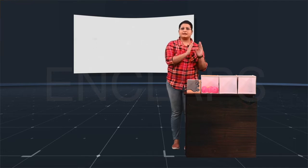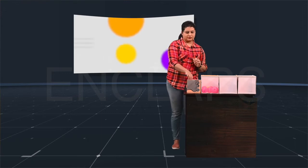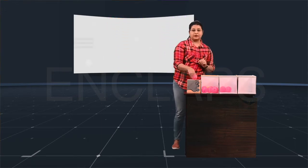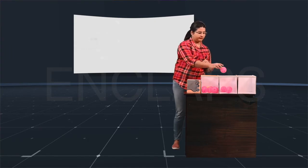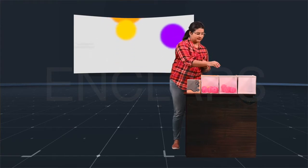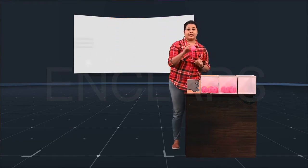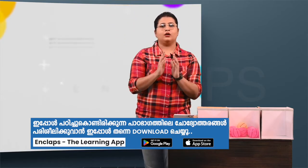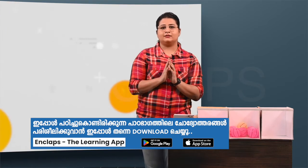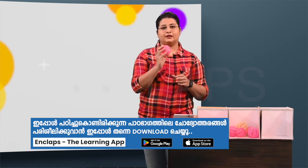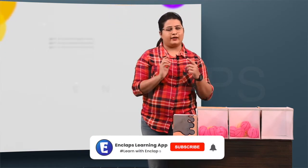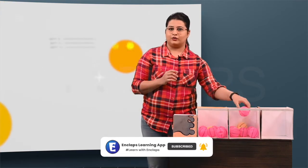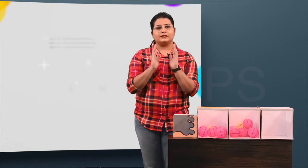Now let's put some balls in the second box — eight rose balls and two yellow balls. Without looking at the box, if I am selecting a ball, which ball has more chance of getting selected? Let's see. We got a rose ball. Let's do it again. Again, I got a rose ball. In this case also, the rose ball has more chance of getting selected since most of the balls are rose in color.